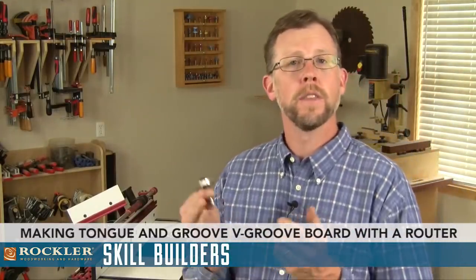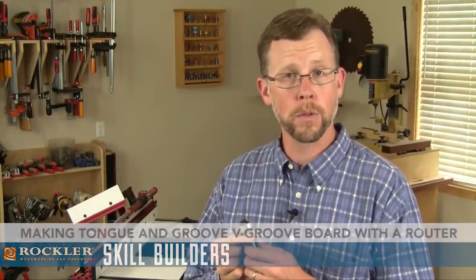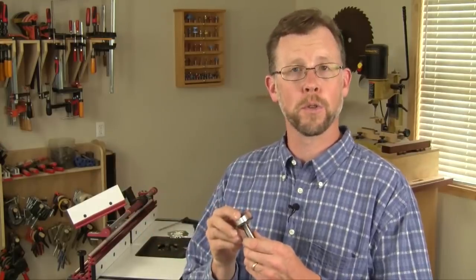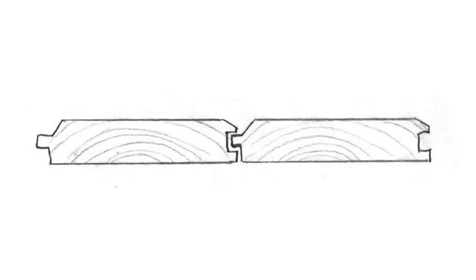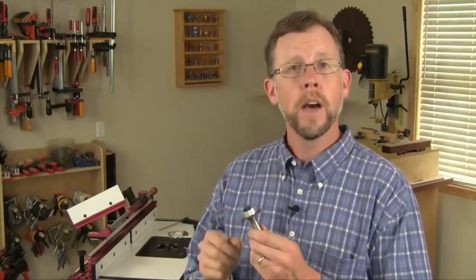Whenever you're making tongue and groove joints, the general practice is to start with the groove and then cut a tongue to fit the groove. If you'd like to make these slats on your router table, I suggest you use a slot cutter for cutting the groove.